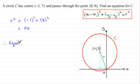I'll just write a short intro here. Therefore, equation of C is essentially: x minus the x coordinate of the center, which is minus (-1), all squared, plus (y - 7)² equals the radius squared which we've seen is 50.